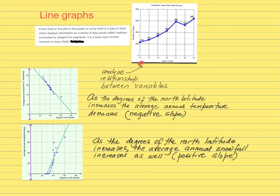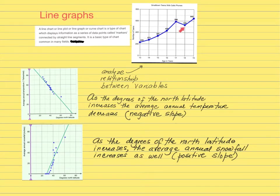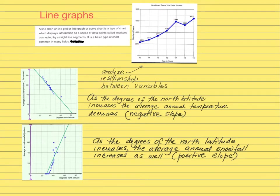Between 13 and 17, you're going to have more kids. Now, what happened after that? The line is going down — from 17 through 18, the tendency is that the amount of teens with cell phones is going to decrease. That description is giving you the relationship between the variables.